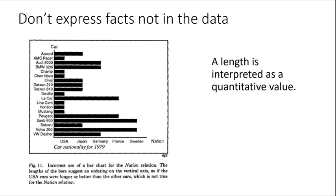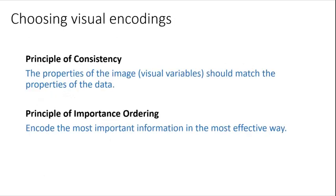So choosing visual encodings. There is this thing called the principle of consistency, meaning that the properties of the image—the visual variables—should match the properties of the data. Don't use a bar chart to display or visualize something qualitative or categorical.